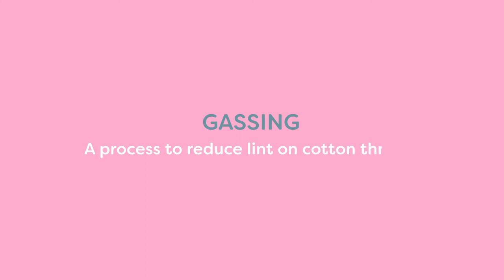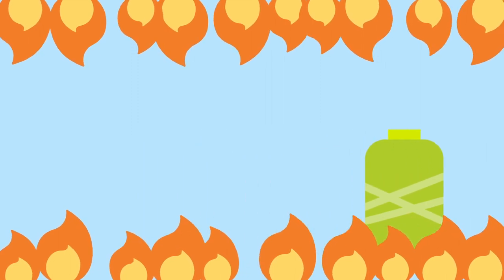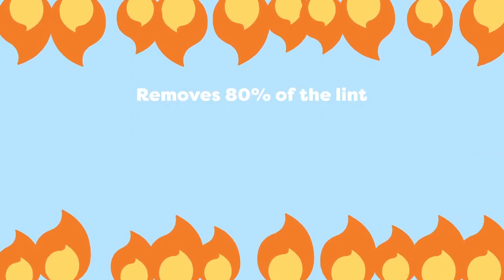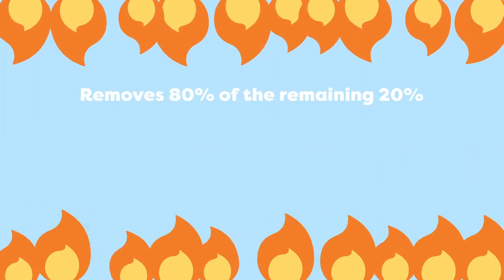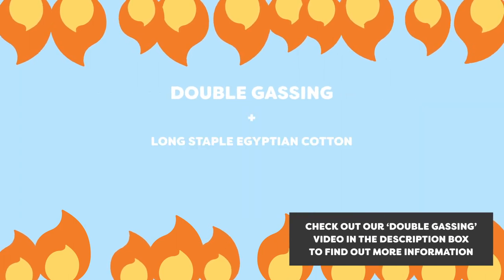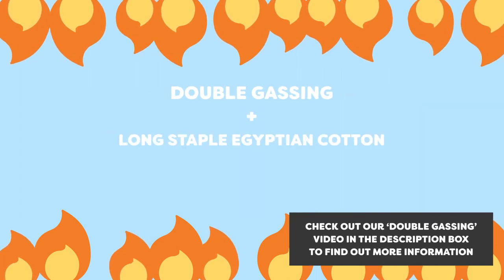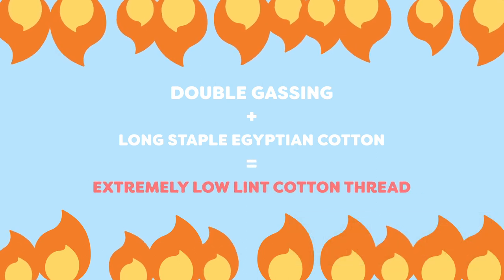Gassing. Gassing is a process some thread manufacturers do to their cotton threads to reduce its lint. The thread passes between two flames, removing about 80% of the lint from its surface. Wonderfill actually repeats this process a second time, so the remaining 20% of the lint has another 80% removed. This double gassing, in combination with the long staple Egyptian cotton it is spun from, results in an extremely low lint cotton thread.